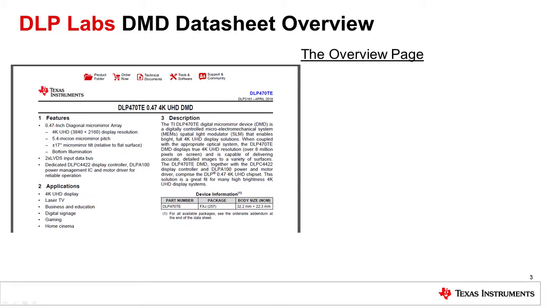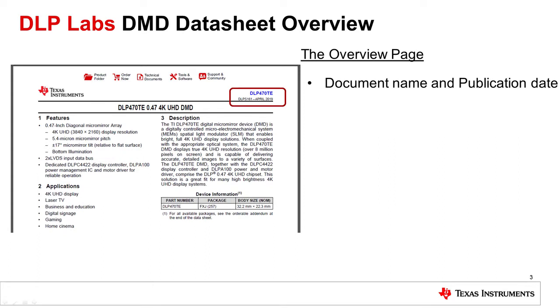The overview page is the first page of the DMD datasheet. The document name and publication date are in the upper right-hand corner of this page, as well as all subsequent pages.